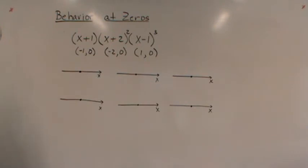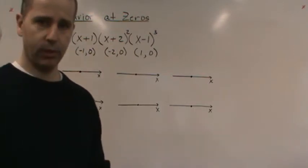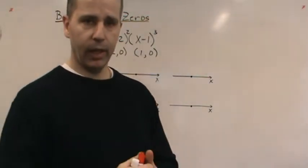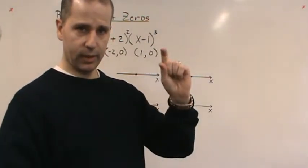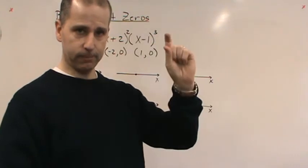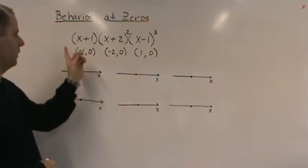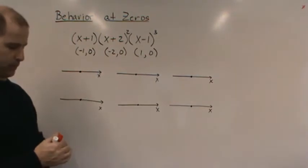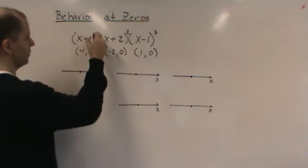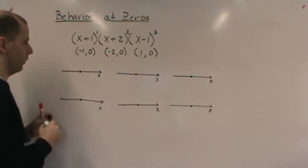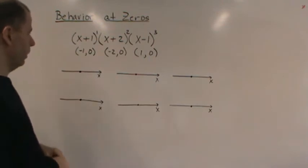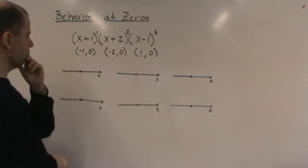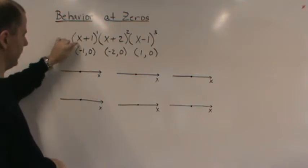Now what's the behavior at each zero? We're going to look at what we call the multiplicity. The multiplicity of a zero is directly related to the exponent on the factor. Notice that these three factors have different exponents. If there's no exponent written, it's assumed to be one.